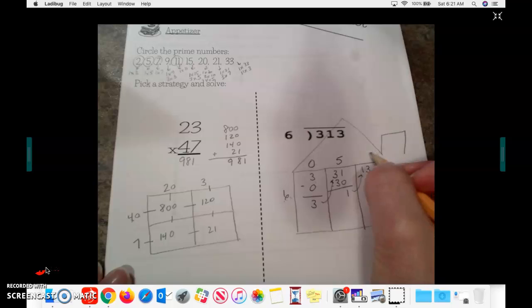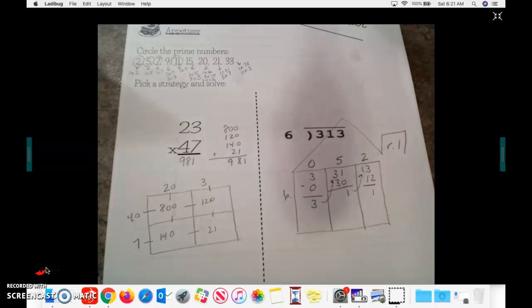6 goes into 13. I know that 6 times 2 is 12. Subtract, and I have a remainder of 1. So 52, remainder 1.